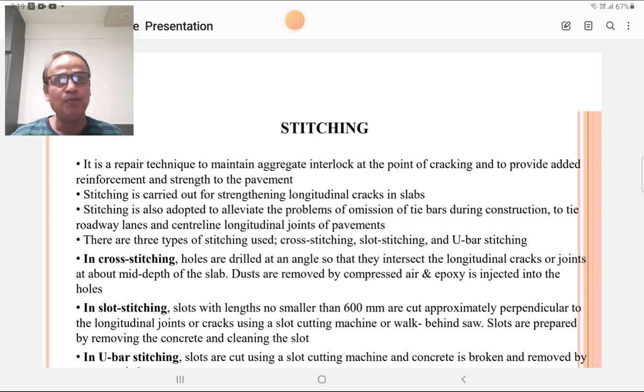In cross stitching, holes are drilled in the concrete pavement at an angle so that they intersect the longitudinal crack or joint at the mid depth of the slab. If this is the slab and this is the crack at mid depth, then cross stitching is carried out. Dust is removed by compressed air and epoxy is injected into those holes. The epoxy grouting is done into those holes for cross stitching.